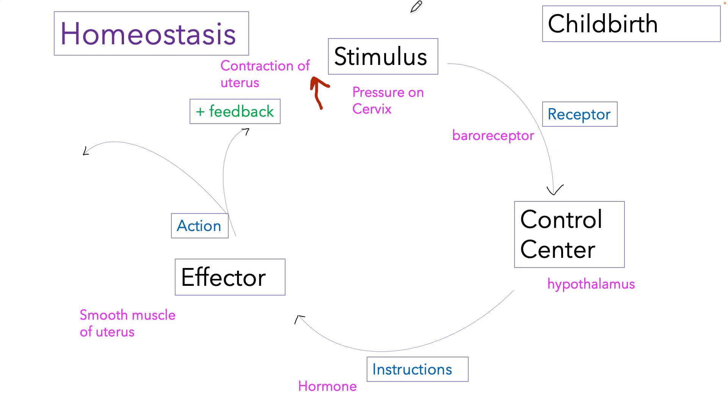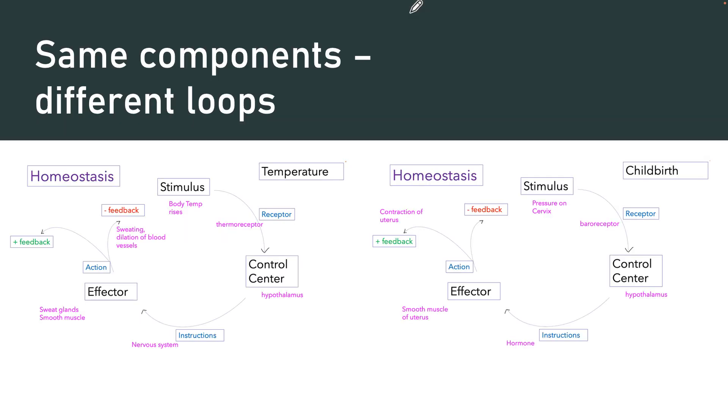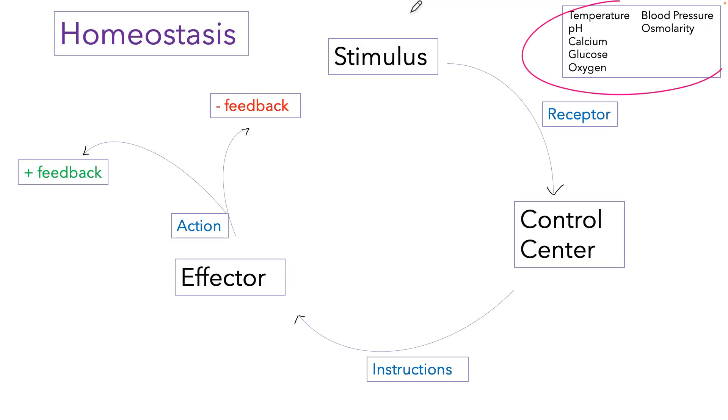And this goes on and on and on, increasing the pressure, more hormones are released, more contraction happens until eventually the baby does get pushed out. At that point, the pressure is gone and we can shut down the loop. But the initial response to pressure on the cervix is actually going to be to create more pressure on the cervix. So that's how we get that positive homeostatic loop. So what's interesting here is we have the same components. Both of them have a stimulus, which is basically some value outside of normal. Both of them have a control center. Both happen to be the hypothalamus, but not always. Both of them are going to send out instructions and have effectors that are going to do something. And sometimes it's positive and sometimes it's negative feedback. So same components, different loops.